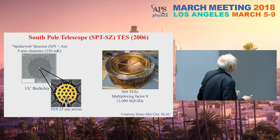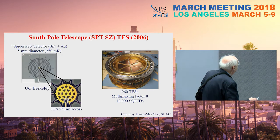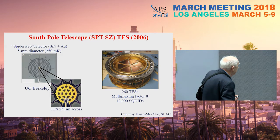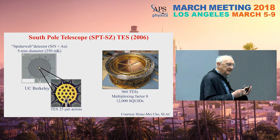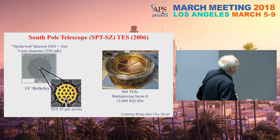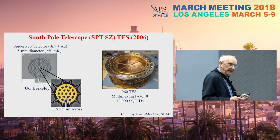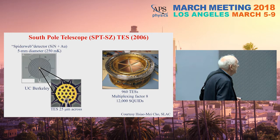The TES absorber is a spiderweb about five millimeters in diameter, made of silicon nitride with a thin controlled gold layer to make it conducting. Right at the center of the spiderweb is a gold disk, and at the bottom is the TES itself — just 25 microns across — which gives you all the sensitivity. In the first manifestation of this on the South Pole Telescope in 2006, there were 960 TESs with a multiplexing factor of eight, meaning eight TESs per SQUID. Since each SQUID actually contains 100 SQUIDs in series, there were 12,000 SQUIDs total.